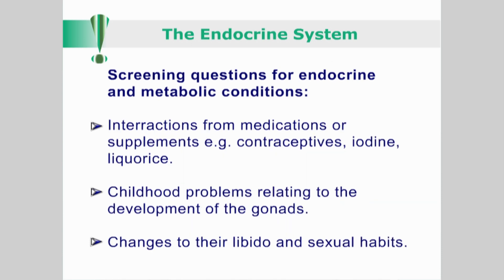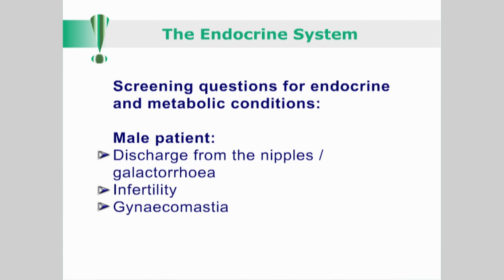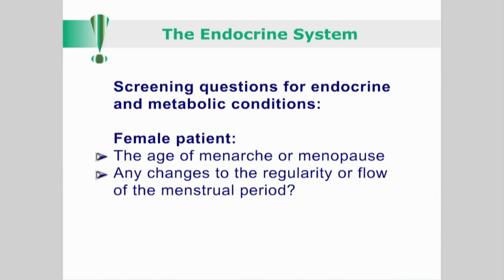Is the patient taking medications or supplements which could interfere with hormone function or metabolism, such as contraceptives, iodine or licorice? Are there any childhood problems relating to gonadal development? Have there been any changes in libido or sexual habits? Is there any discharge from the nipples, or galactorrhea? Is the patient infertile? Is there any evidence of gynecomastia? In a female patient, inquire about the age of menarche and/or menopause, and any recent changes in the irregularity or flow of the menstrual period.